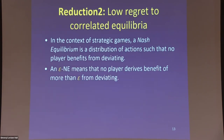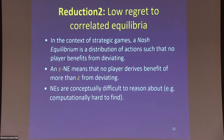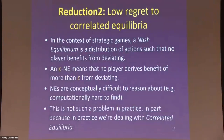Now a second reduction — something completely different. In the context of strategic games, a Nash equilibrium is a distribution of actions such that no player has an incentive to deviate. It's a solution concept — a plot device to understand games. Epsilon-Nash means no player derives too much benefit from deviating. These are conceptually difficult to reason about; computation is hard, and it's not clear how to get a handle on them.